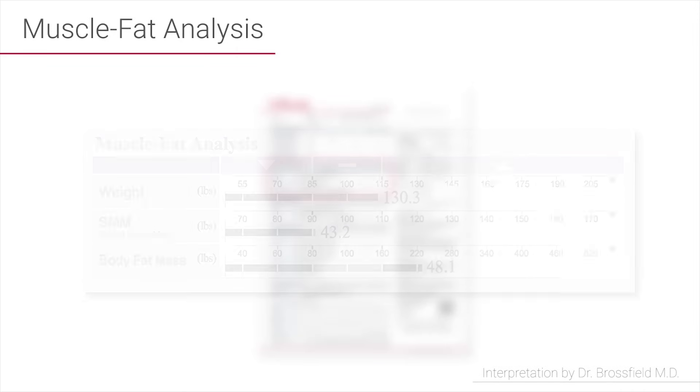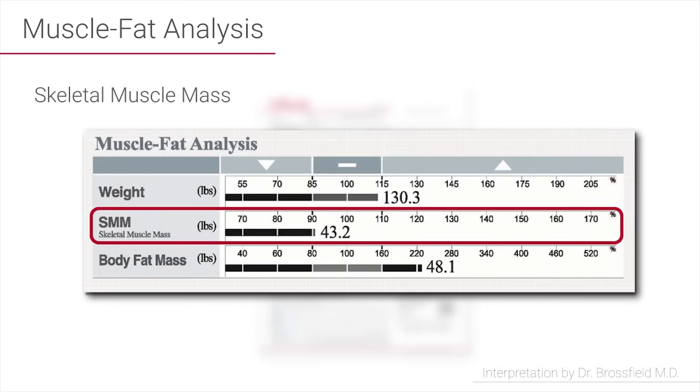The great thing about skeletal muscle mass is that every pound of muscle burns 70 calories per pound of muscle per day, and so your skeletal muscle mass is the way you can increase your metabolism. The more muscle you build, the higher your metabolism will go in regards to how many calories you burn in a day.